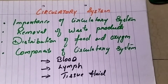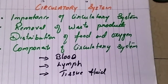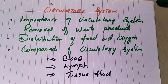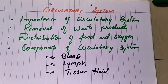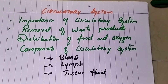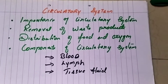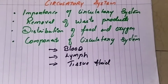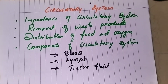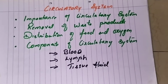These are the important processes which take place in the circulatory system. The first point is the importance of the circulatory system — why it is important and why we need to know about it. It performs two important functions: the first is the removal of waste products, and the second is the distribution of food and oxygen to the body.